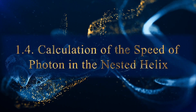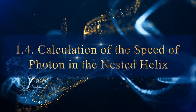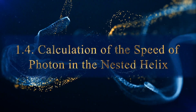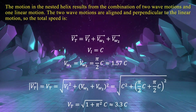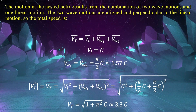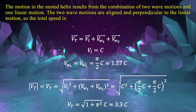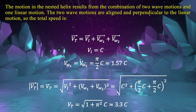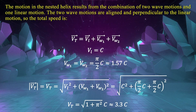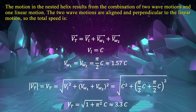Calculation of the speed of photon in the nested helix. The motion in the nested helix results from the combination of two wave motions and one linear motion. The two wave motions are aligned or perpendicular to the linear motion, so the total speed is the speed of the photon in the nested helix.